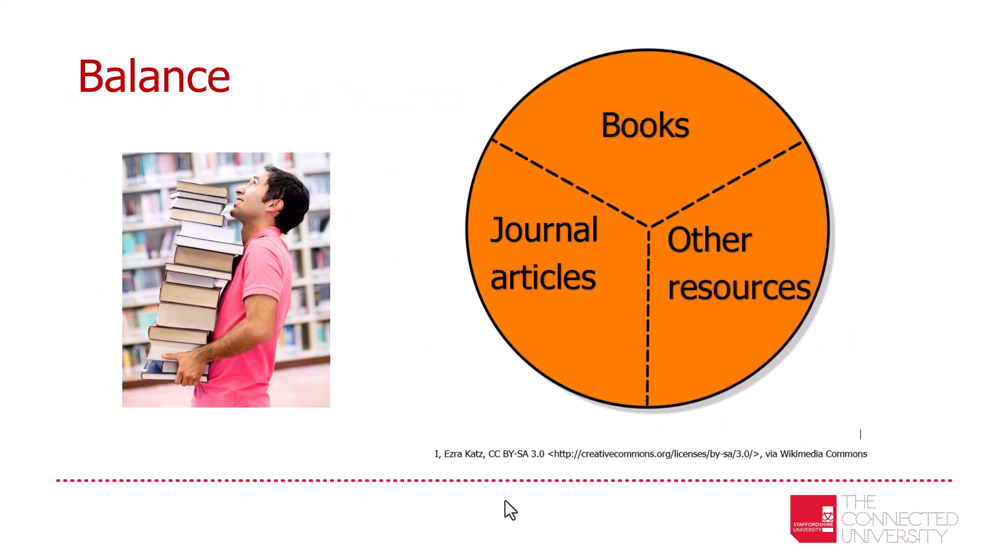There needs to be a balance of the resources you're using. You might be thinking you're just going to use journal articles now and no other kind of resource — but that's not really possible. It's a good idea to aim for roughly one third books, one third journal articles, and one third other resources — so that might be web pages, reports, videos, lecture notes, etc. You will need to use official websites related to your subject, and there will be key books on your reading list that your lecturers expect you to refer to. The journal articles you find via library search will then enhance and support those other resources.